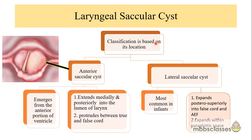Laryngeal saccular cysts are classified based on location into two groups: anterior saccular cyst and lateral saccular cyst. The lateral saccular cyst is more common in infants. The anterior saccular cyst emerges from the anterior portion of the ventricle and may extend medially and posteriorly into the lumen of the larynx, protruding between the true and false vocal cords. The lateral saccular cyst expands posteriorly into the false vocal cord and aryepiglottic fold and is seen to expand within the paraglottic space.